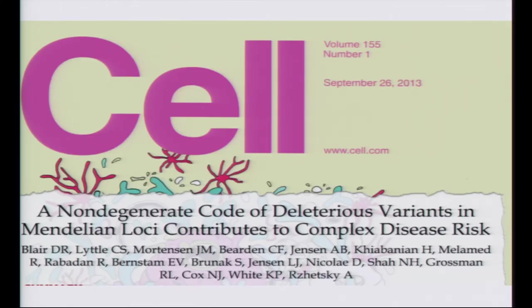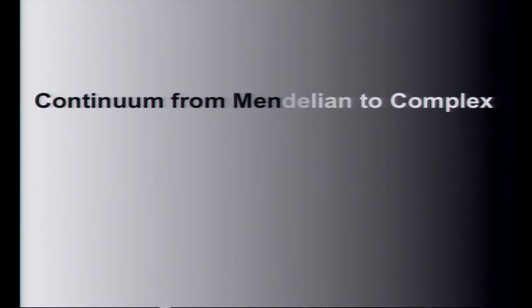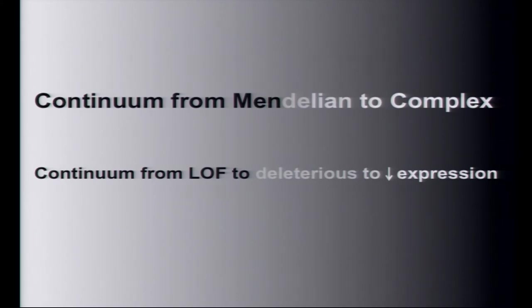Now I'm going to tell you about the integration with electronic medical records. Ever since we worked with Andrei Rzhetsky on a Cell paper where he used 130 million electronic medical records to show that each common disease has a characteristic set of Mendelian common diseases over-represented among them — he called it a Mendelian barcode — I've been obsessed with understanding the continuum between Mendelian and complex common diseases, and the continuum between loss-of-function mutations, deleterious amino acid polymorphisms, and just reduced expression of genes.